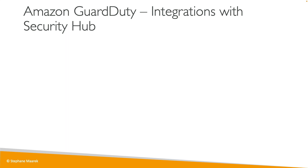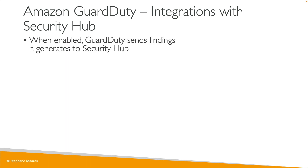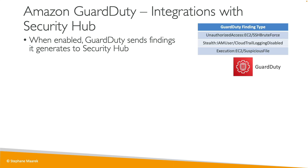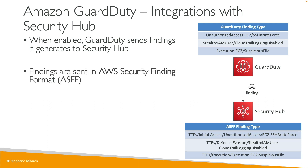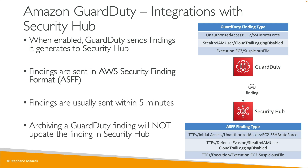Let's look at the integrations with Security Hub. GuardDuty generates findings — such as CloudTrail logging disabled, suspicious files, or SSH brute force — and these findings are sent automatically to the Security Hub. They are converted to the ASFF format, the AWS Security Finding Format, which is what Security Hub uses overall. Findings are usually sent within five minutes. If you archive a finding in GuardDuty, it does not update the finding in Security Hub, so make sure you manage findings directly in Security Hub.